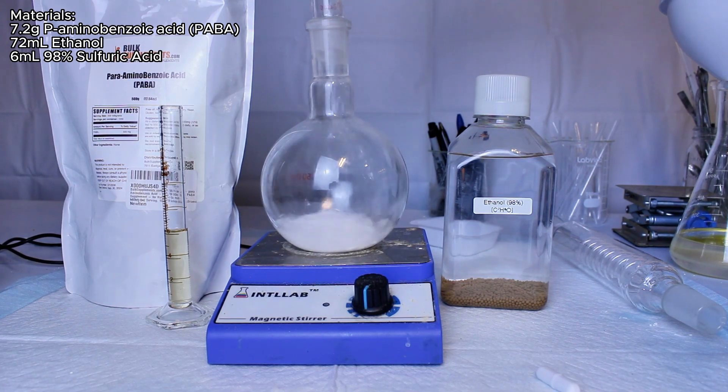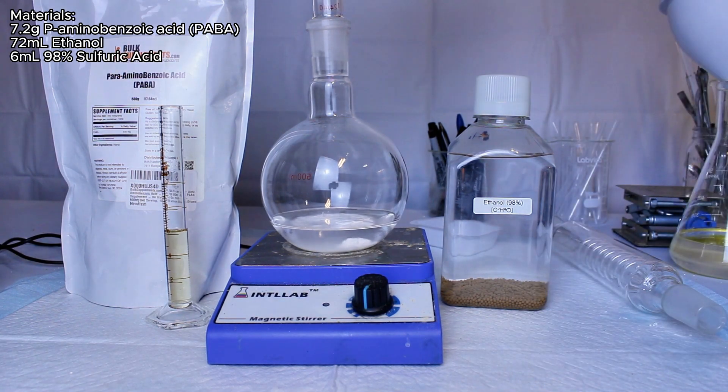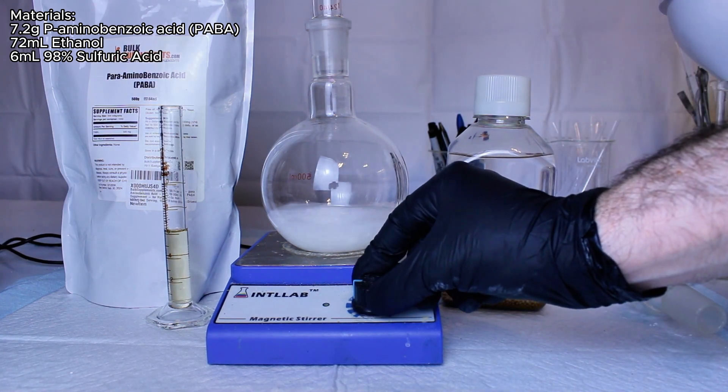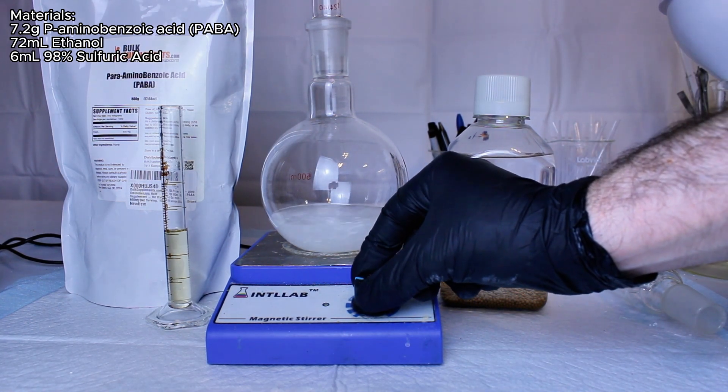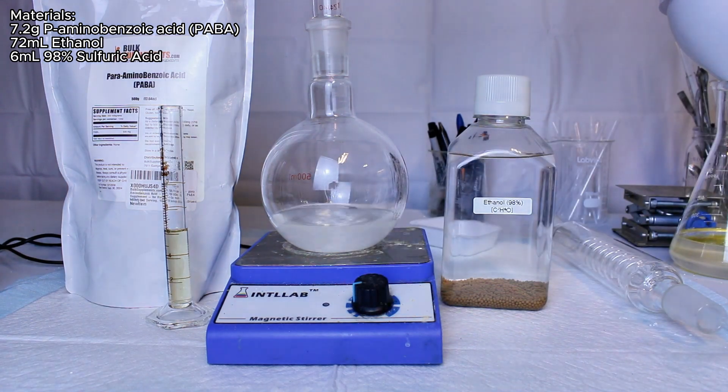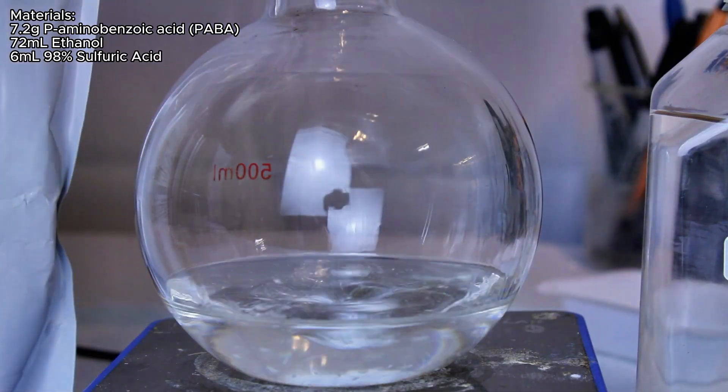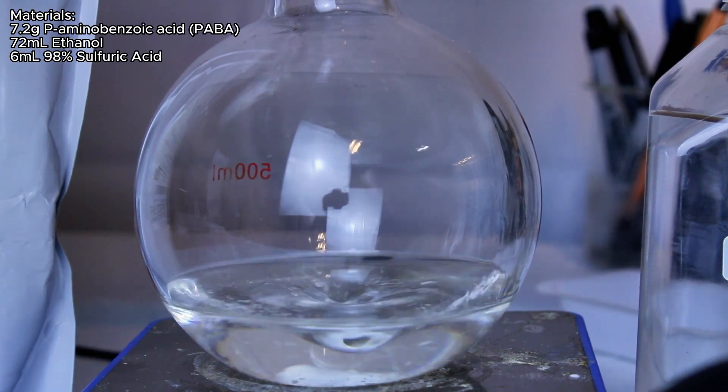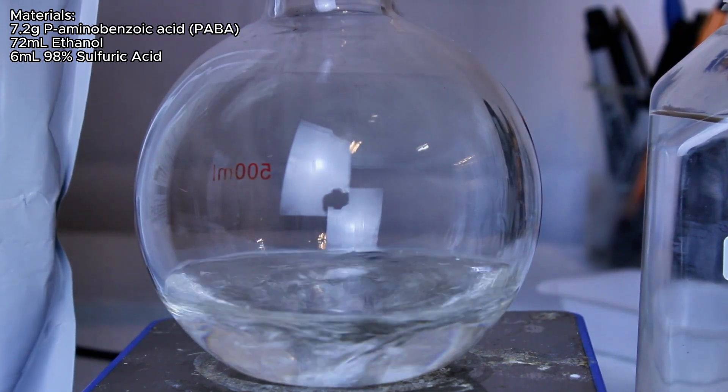The first ingredient is called para-aminobenzoic acid, or PABA, which is weirdly enough sold as a nutritional supplement. The second ingredient is anhydrous ethanol, which I've made before on this channel, and the third is concentrated sulfuric acid, which I've also made on this channel.